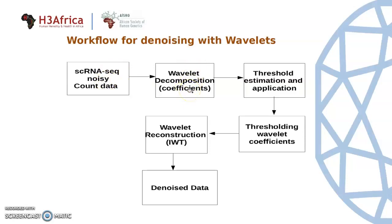From these coefficients, a threshold value is estimated, and then we threshold the wavelet coefficients. The thresholded wavelet coefficients are then reconstructed using the inverse wavelet transform to get the denoised data.